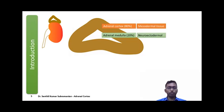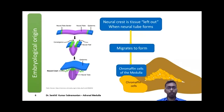The adrenal cortex originates from mesodermal tissue, while the adrenal medulla originates from neuroectodermal tissue. The neural crest cells, which are the cells left over when the neural tube forms, migrate to the adrenals to form the chromaffin cells of the adrenal medulla. Hence, the origin of adrenal medulla is neuroectodermal.